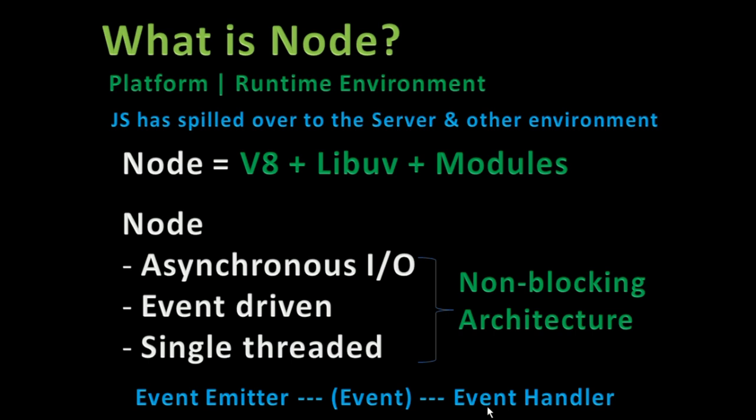The third thing is single-threaded. In PHP, Java, and similar languages, when a request comes in, a new thread is spawned, so you keep having multiple threads — that's called multi-threading. But Node has the ability to run all requests on a single thread. To be precise, the event loop runs on one thread and execution on another, but it is effectively single-threaded because we don't spawn a new thread per request.